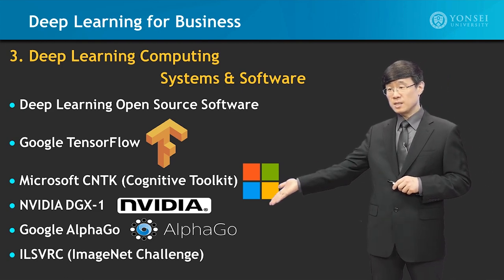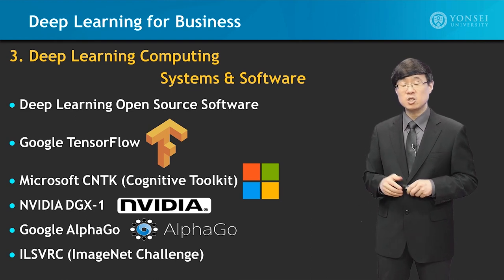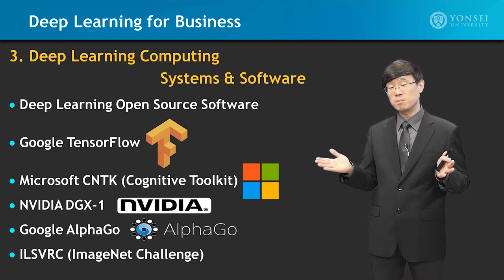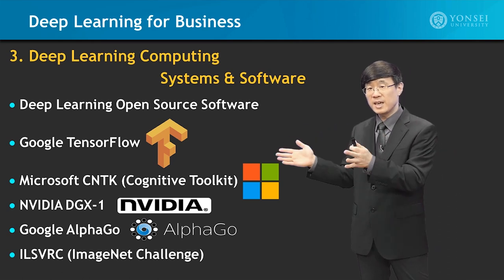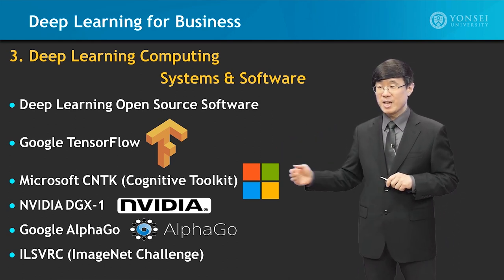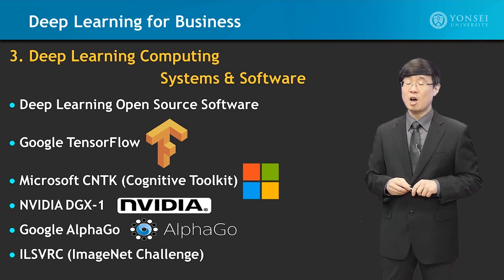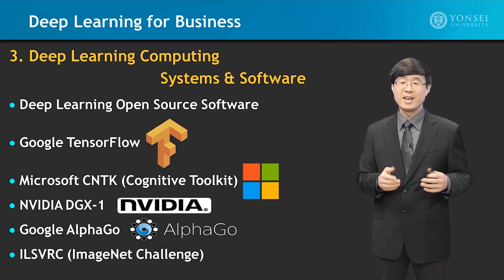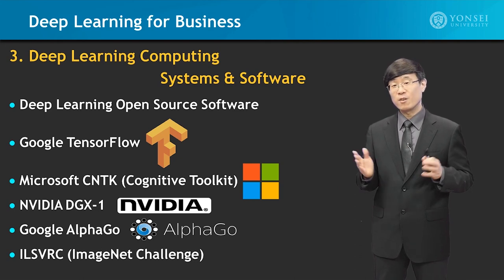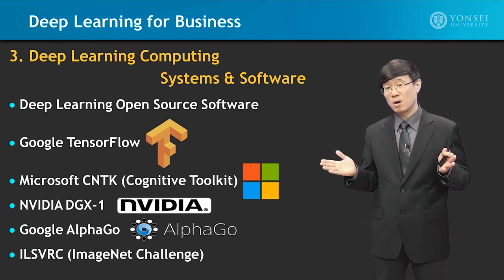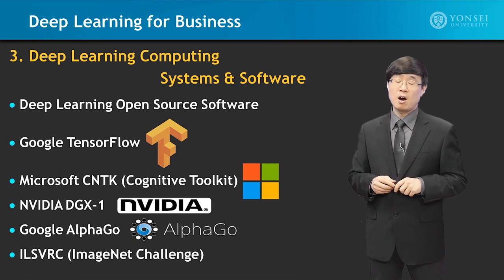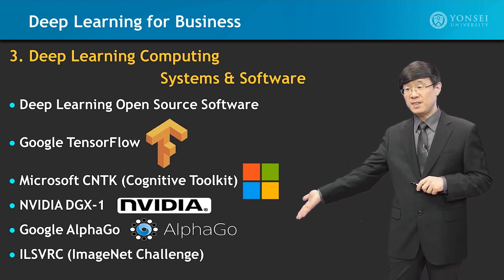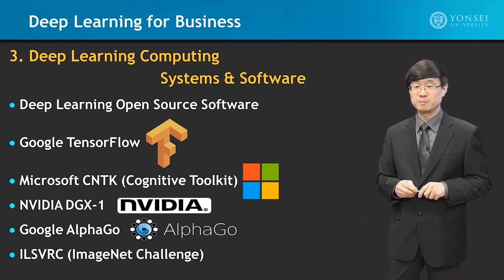AlphaGo and the ImageNet Challenge are particularly interesting. AlphaGo provides a comparison between humans competing against deep learning technology, while the ImageNet Challenge is a competition between deep learning systems to see who performs better. There are very few ways to benchmark or compare artificial intelligence systems, and AlphaGo and the ImageNet Challenge provide a great reference for that.